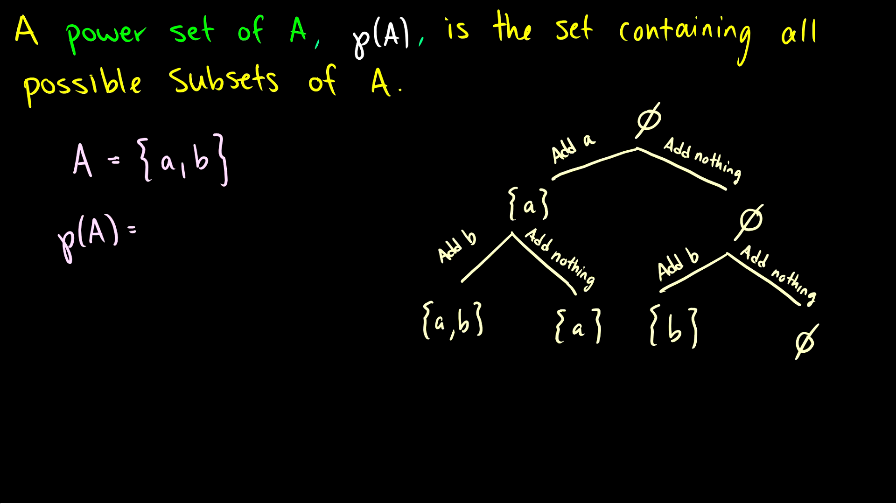Now that we have a rough idea of what subsets are, we can talk about power sets. The power set of A, written P(A), is the set containing all possible subsets of A. This can be a little confusing at first. Let's figure out how to generate all possible subsets.